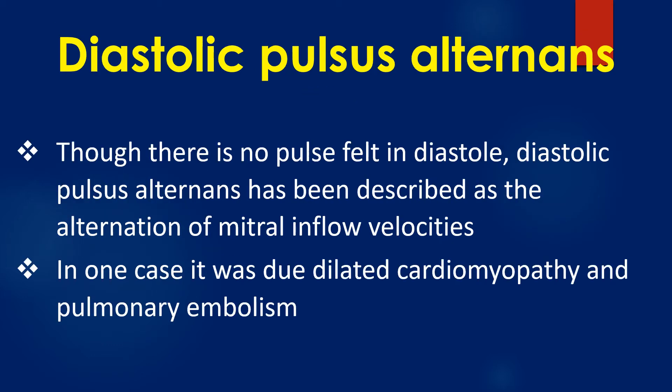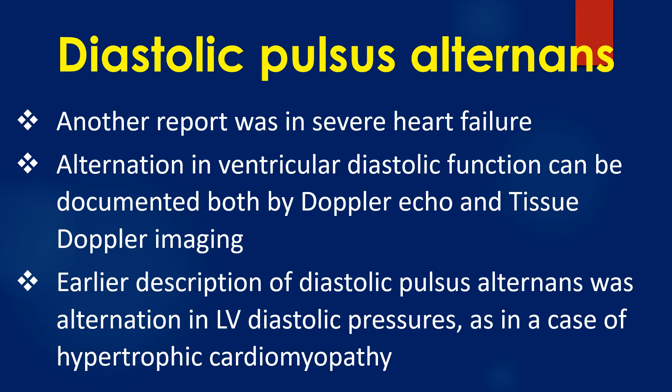Though there is no pulse felt in diastole, diastolic pulse alternance has been described as the alternation of mitral inflow velocities. In one case it was due to dilated cardiomyopathy and pulmonary embolism. Another report was in severe heart failure. Alternation in ventricular diastolic function can be documented both by Doppler echo and tissue Doppler imaging. Earlier description of diastolic pulse alternance was alternation in left ventricular diastolic pressures, as in a case of hypertrophic cardiomyopathy.